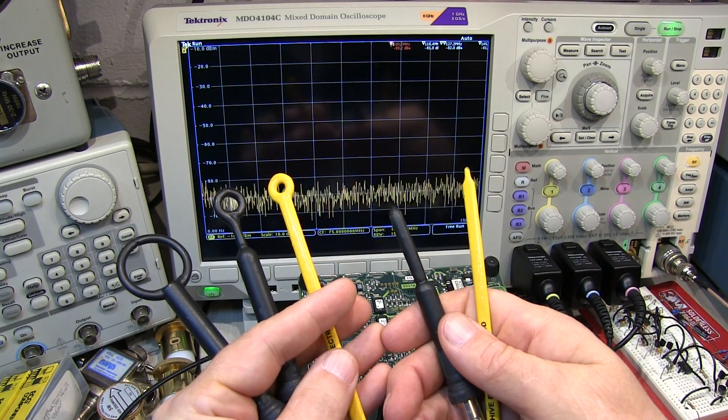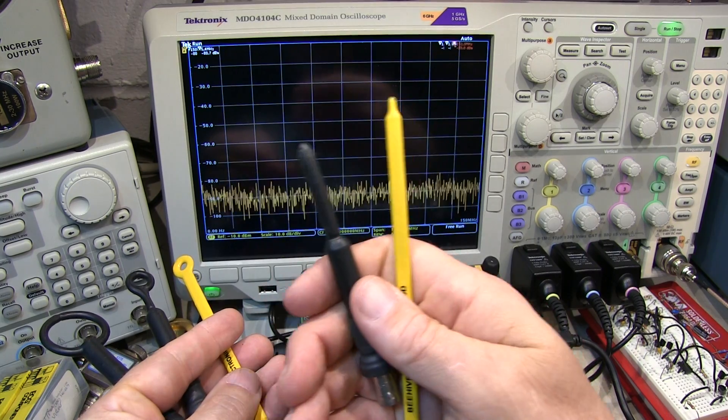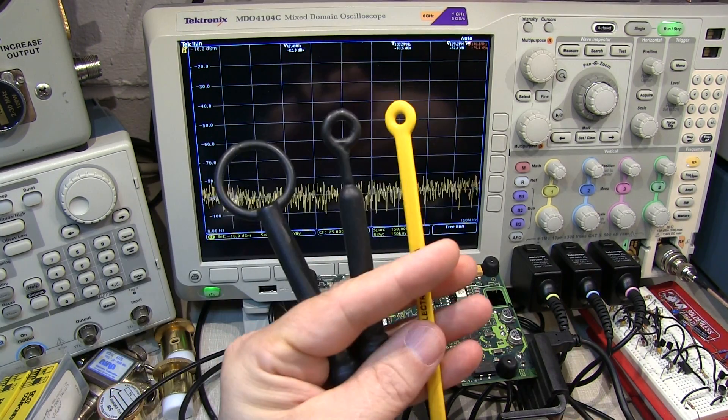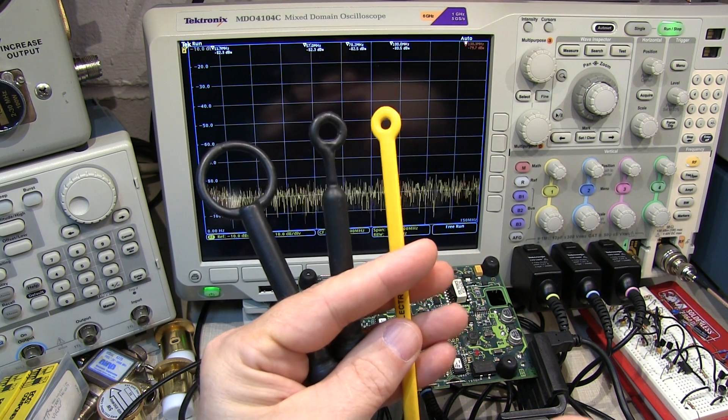These near field probes can be broken down into two basic types. These are the E field probes, or electric field probes, and these are the H field, or magnetic field probes. So let's take a look at what each of them does.